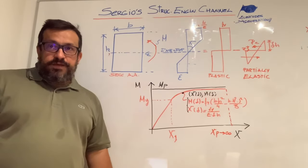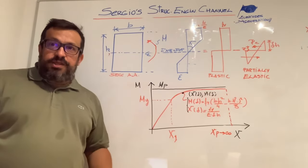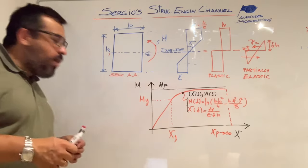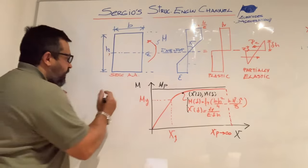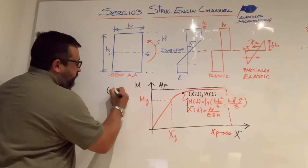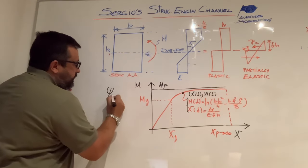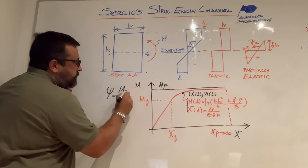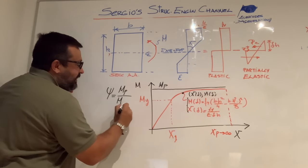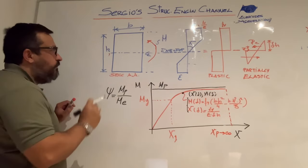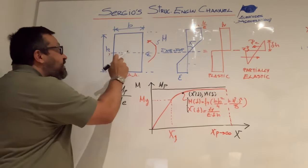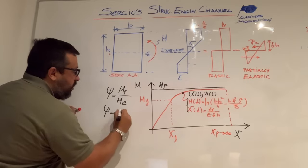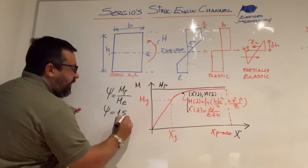I couldn't finish the video without mentioning the concept of the shape factor. The shape factor is simply the relationship between the plastic bending moment divided by the elastic bending moment. For a rectangular section, this shape factor is always equal to 1.5.